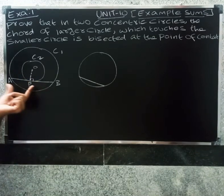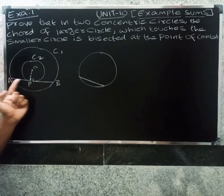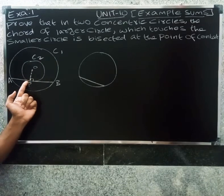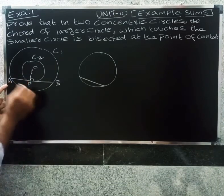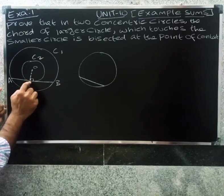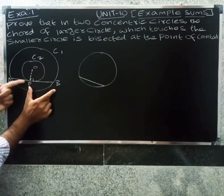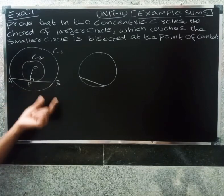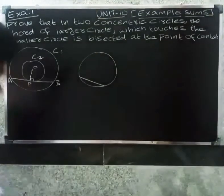So at the point of contact, AP equals BP. The chord of the smaller circle is tangent to it. Bisected at the point means AP equal to BP — that is what we need to prove.